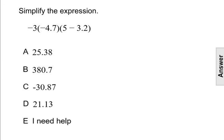Simplify the expression negative 3 times negative 4.7 times the quantity of 5 minus 3.2. When simplifying any expression, it's best to use the acronym PEMDAS to help us know the order of operations.